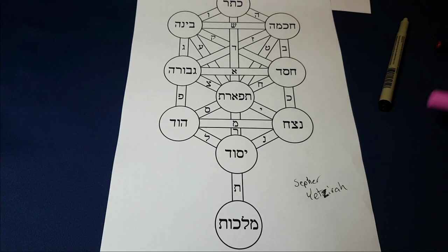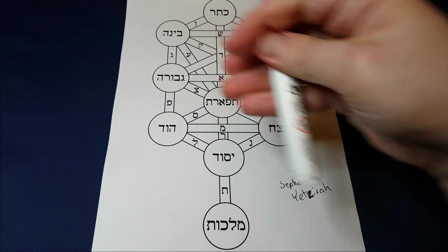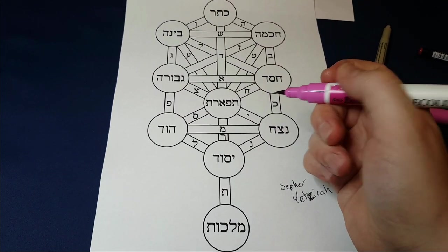All of the paths on both the Lurianic and the Hermetic Tree of Life, they're all associated to a letter of the Hebrew alphabet. Okay, so let me show you where the paths are on this Lurianic version.